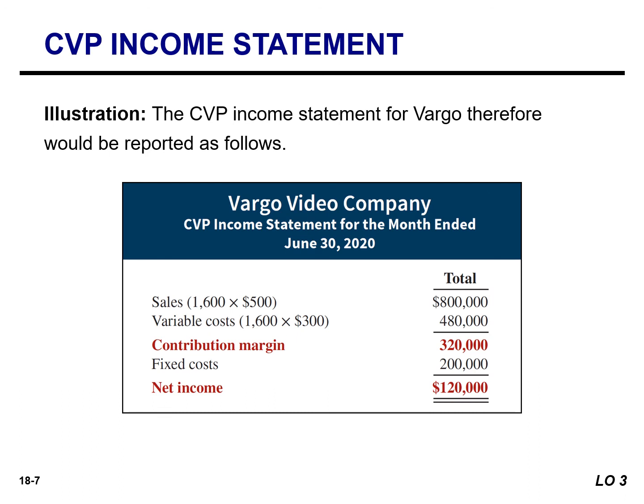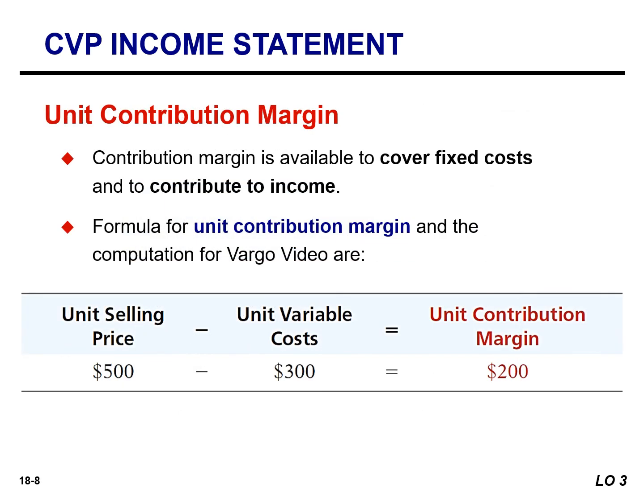When preparing a CVP income statement, we need four things: an activity level or sales volume, a selling price per unit, a variable cost per unit, and a fixed cost. Taking a sales volume of 1,600 multiplied by the selling price gives total sales of $800,000. Multiplying 1,600 by the variable cost per unit of $300 gives total variable cost of $480,000. Subtracting variable cost from sales gives the contribution margin, and subtracting fixed cost from contribution margin gives net income. The contribution margin is the amount available to cover fixed costs and contribute to income.